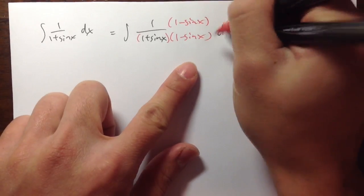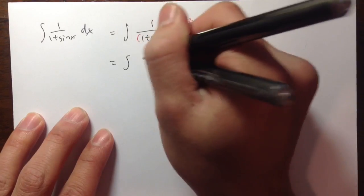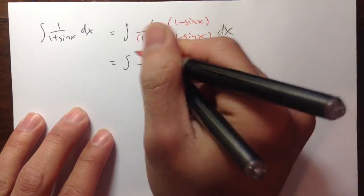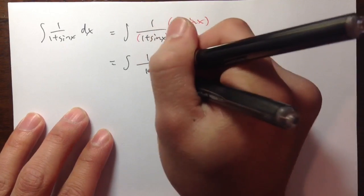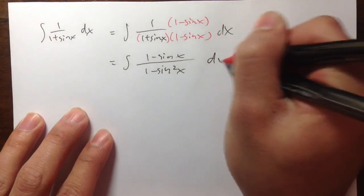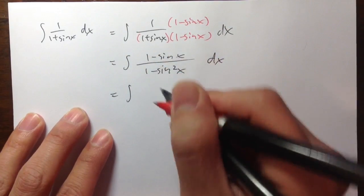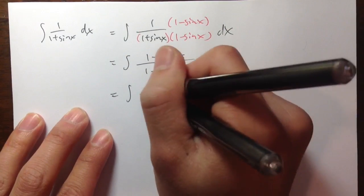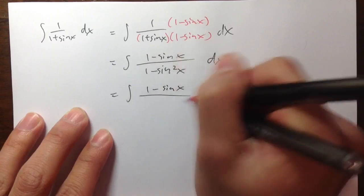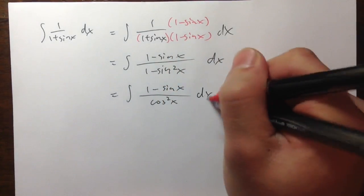You still have the dx. On the top, you just have 1 minus sin x. On the bottom, if you multiply it out, you get 1 minus sin squared x dx. We can switch that to cosine squared x on the bottom using the Pythagorean identity, so on the top I still have 1 minus sin x, and on the bottom I now have cosine squared x dx.